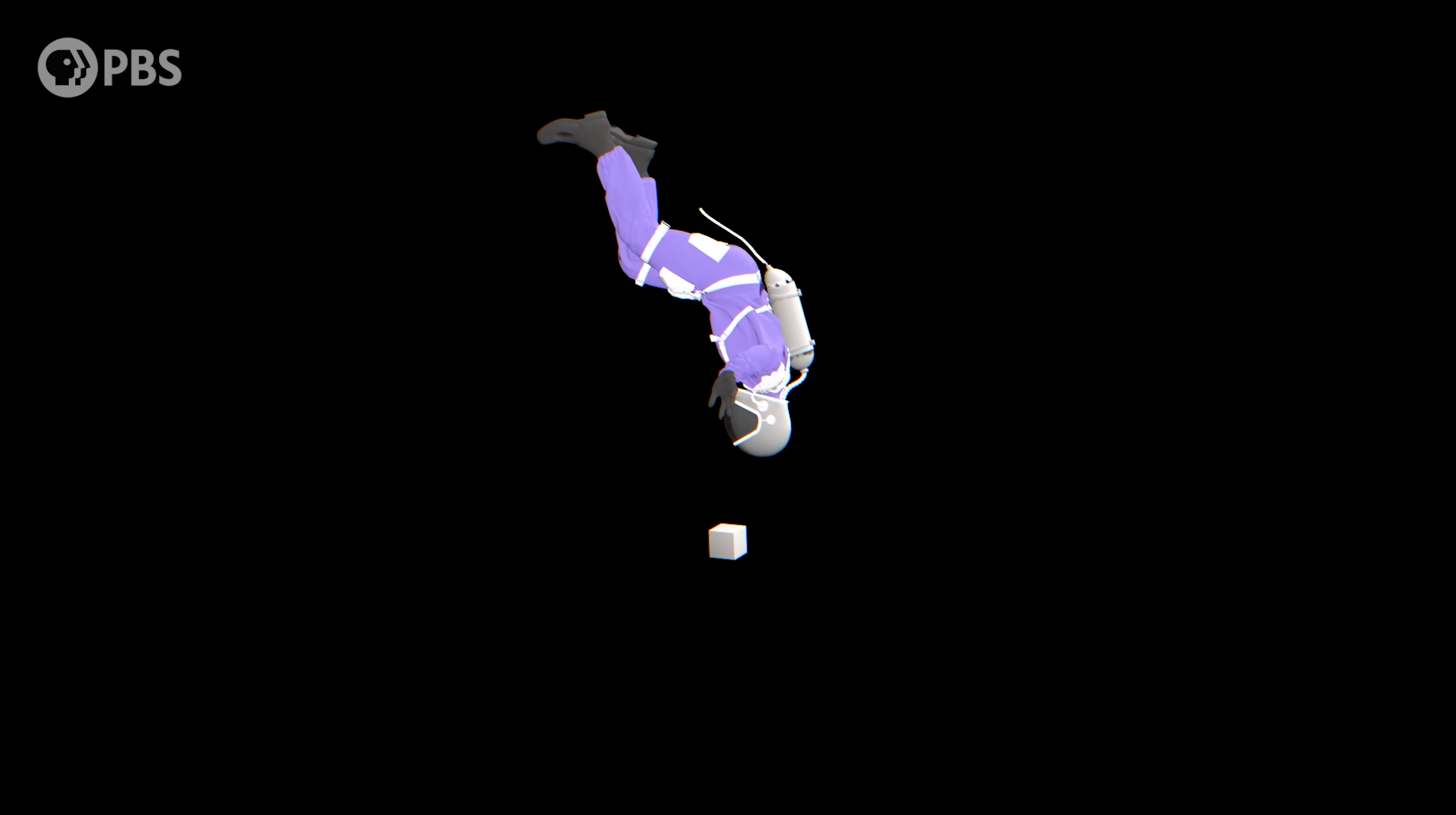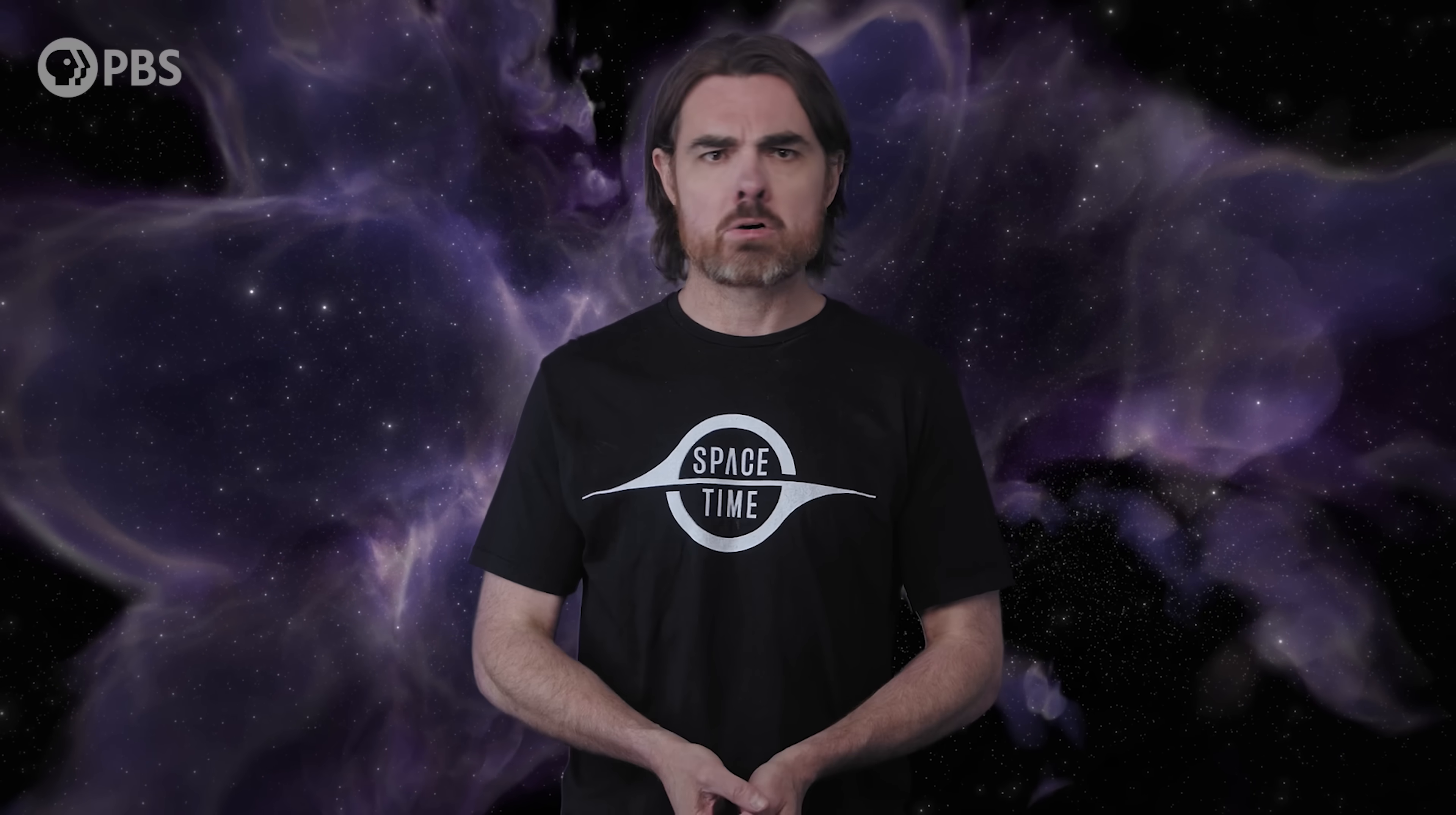And nothing weird happens. Remember the equivalence principle that tells us there's no experiment you can do or observation you can make on the local patch of space that distinguishes whether that patch is free-falling or free-floating. This principle is the bedrock of general relativity and physicists are very uncomfortable by anything that appears to violate it. Remember this because we may have to break the equivalence principle later and that should make you uncomfortable also.